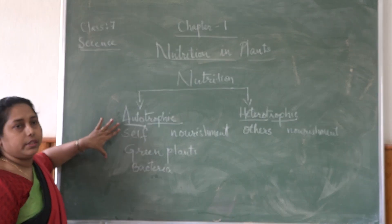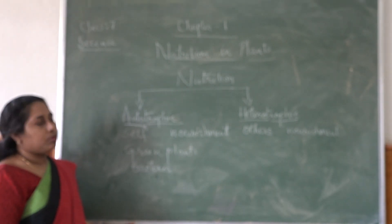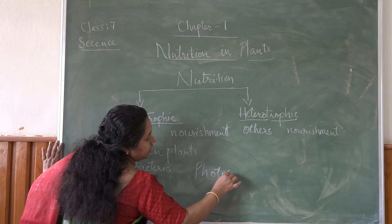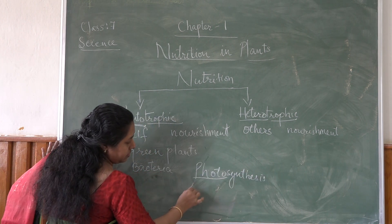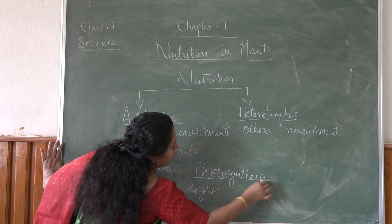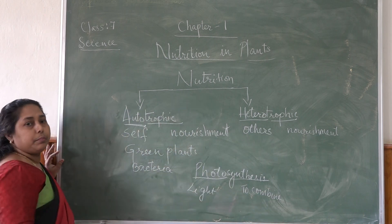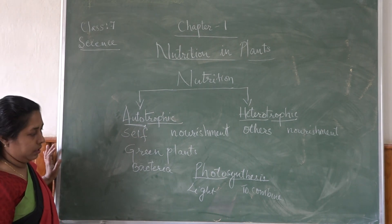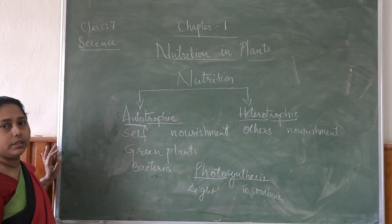Now we have to study in detail about autotrophic nutrition. Green plants are the major ones which prepare their own food. So green plants are called autotrophs. They do this nutrition by a process known as photosynthesis. Photo means light and synthesis means to combine. Already you have learned it in previous classes.